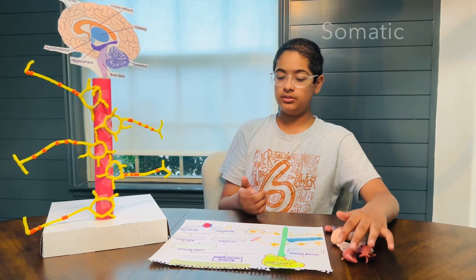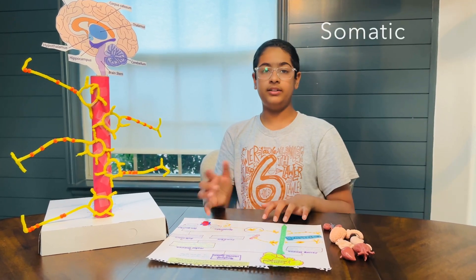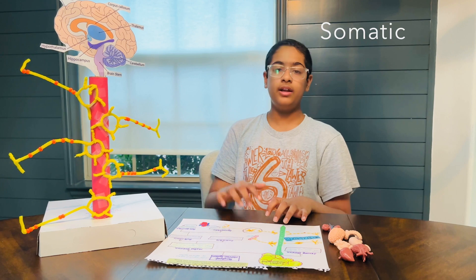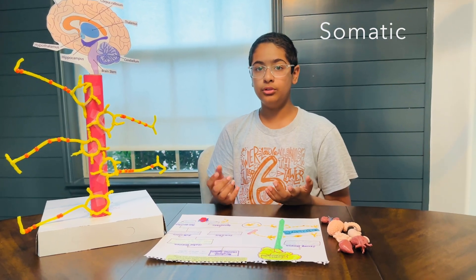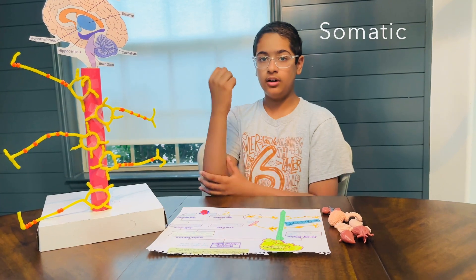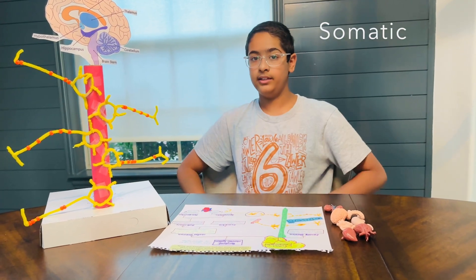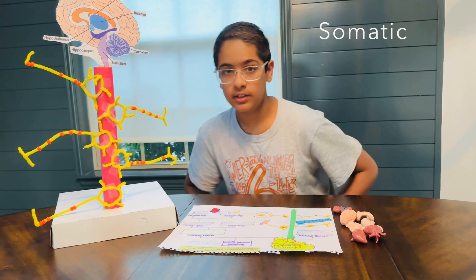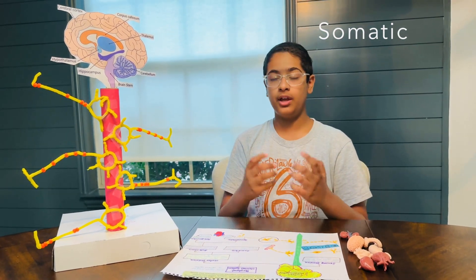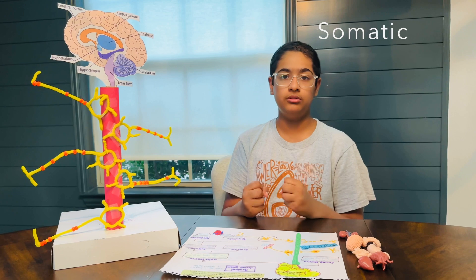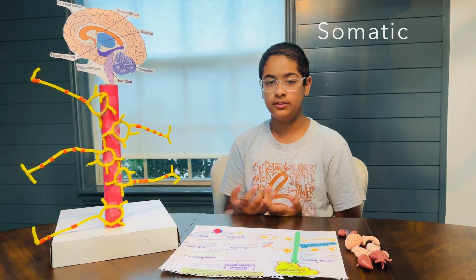Now, the somatic one takes the signals from the brain to the voluntary muscles. Those muscles being our heads, arms, face, legs, feet, whatnot. This way, we have control over what we do and we have control over how to move and all of that stuff.